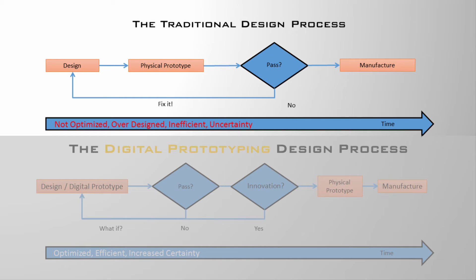Let's compare the traditional design process with the digital prototyping design process. In the traditional design process, the initial concept is developed using a combination of past experience, hand calculations, and educated guesses. It is not unusual for the first physical prototype of that design to fail, resulting in another iteration — more design time and another physical prototype built. Each iteration adds cost and increases time to market. When a design does pass physical testing, there is little confidence it is optimized. It did not fail, but is it over-designed?